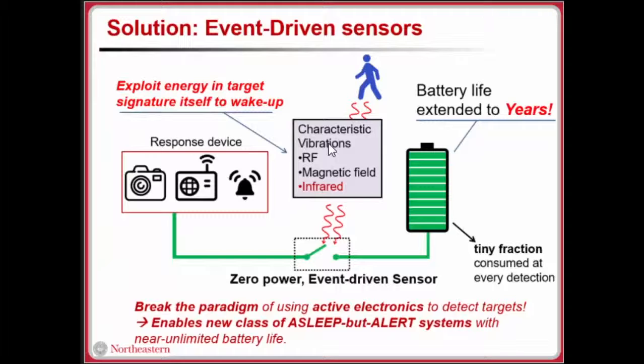There are different kinds of energies emitted by a target that are very characteristic of that target. This could be certain frequencies of vibration, RF radiation, magnetic field fluctuations, infrared wavelengths and so on.